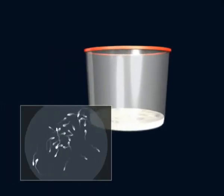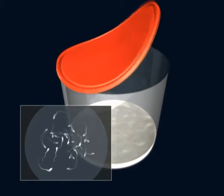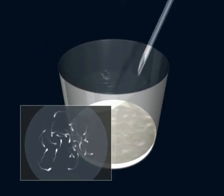The semen sample has to be obtained through masturbation after an abstinence of three to five days. The ejaculate is deposited in a collection pot.